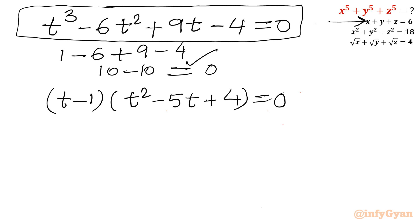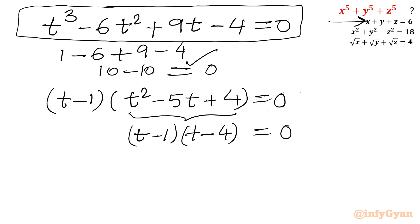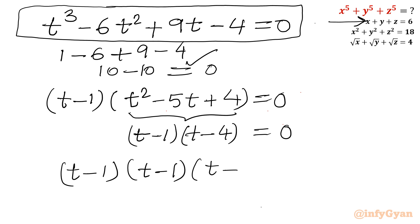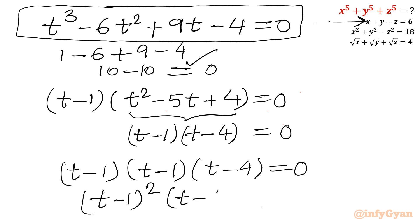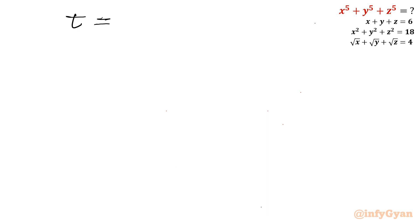Factorizing t² − 5t + 4 gives (t − 1)(t − 4) = 0. So the full factorization is (t − 1)²(t − 4) = 0, giving roots t = 1, 1, and 4.